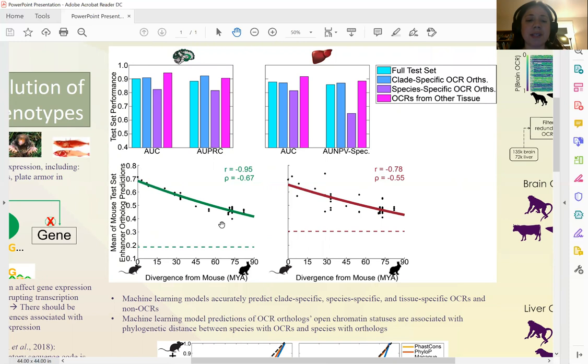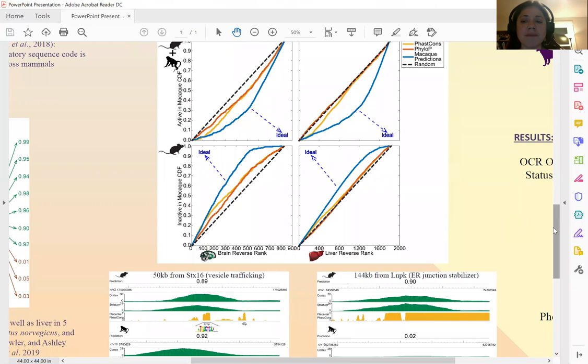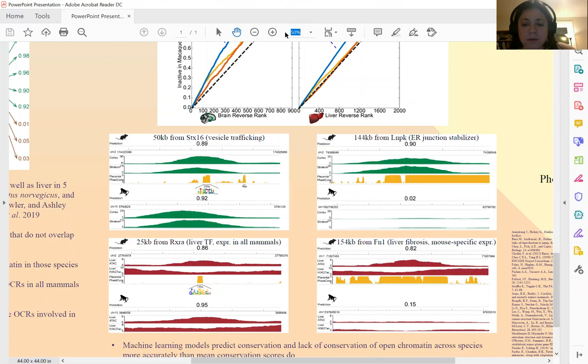In addition, we found that our predictions tend to be more accurate in predicting whether open chromatin will be conserved than conservation scores. We investigated some specific examples where our models worked better than conservation scores.